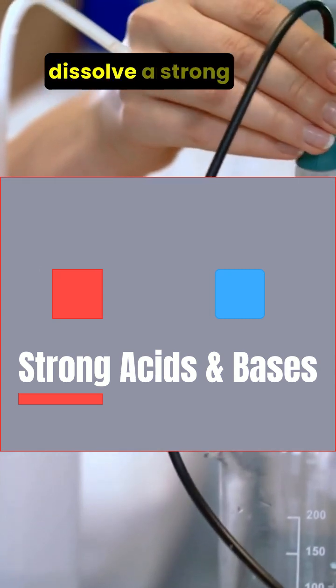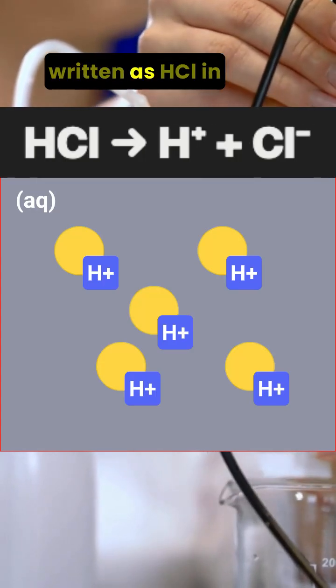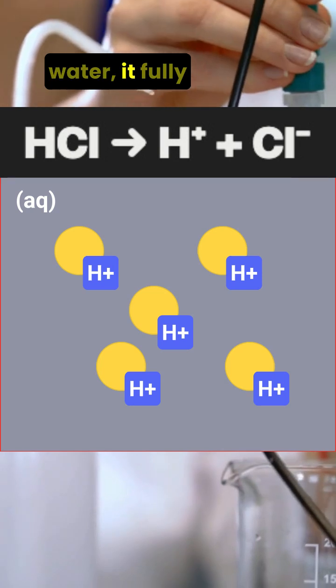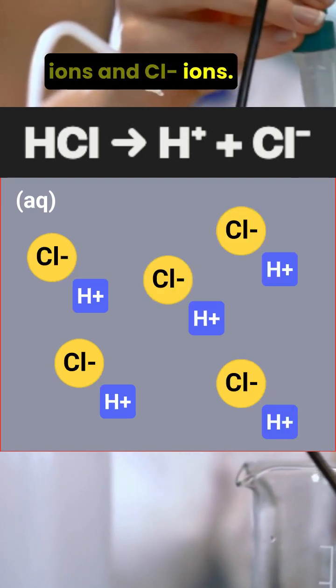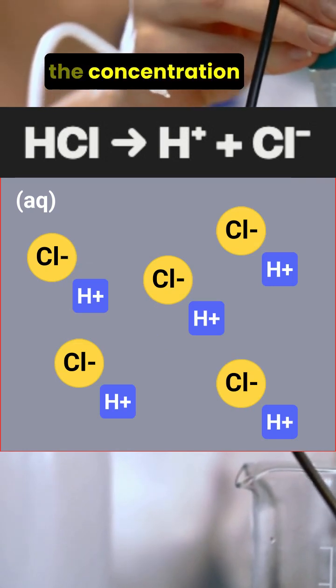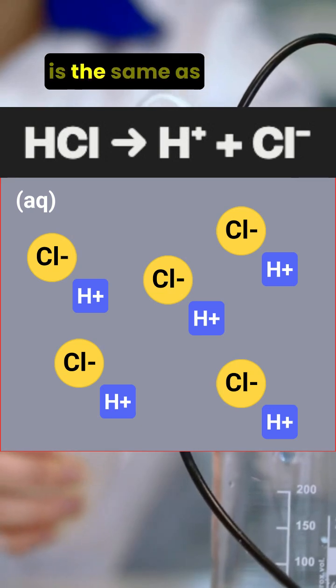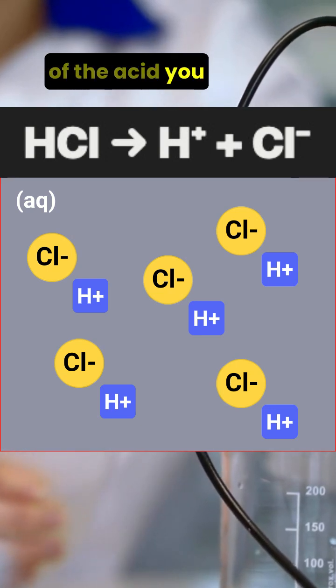That means when you dissolve a strong acid like hydrochloric acid, written as HCl, in water, it fully separates into H+ ions and Cl- ions. Since the dissociation is complete, the concentration of H+ ions is the same as the concentration of the acid you started with.